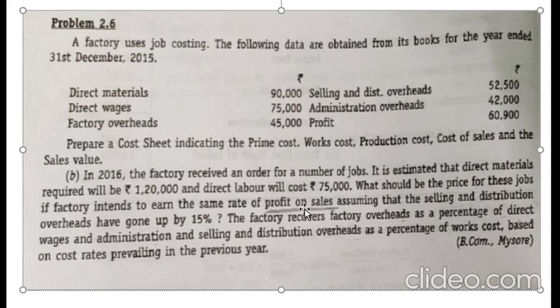We will have two cost sheets: the current period's cost sheet and the estimated cost sheet. We will first prepare the current period's cost sheet, and using those figures we will find out the percentage for each overhead — factory overhead, administration overhead, and selling and distribution overhead. Then after finding the percentages we will use them for calculating the estimated cost sheet.